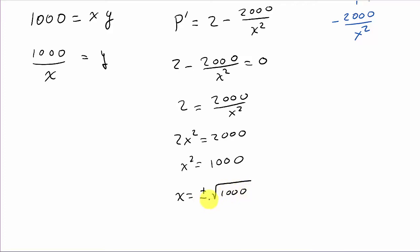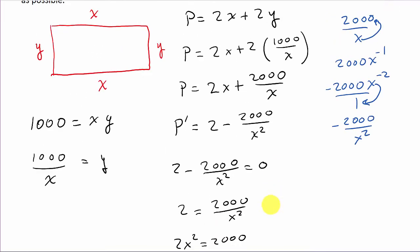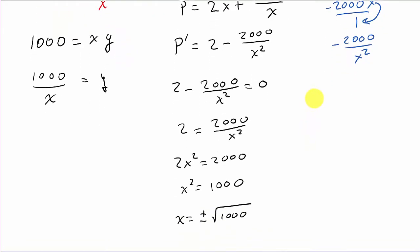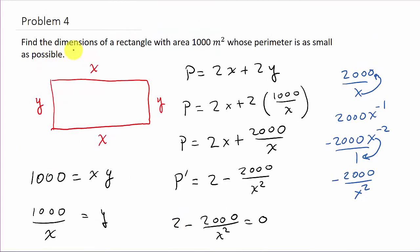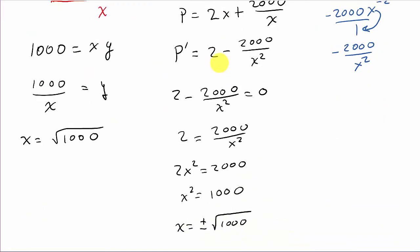Alright. Well, we know it's not going to be the negative, because the length of the side of a rectangle is not going to be negative. So, that tells us that x is going to equal the square root of 1000. So, there's your x value. See, they want to know the dimension. So, x is the square root of 1000, and that is meters.